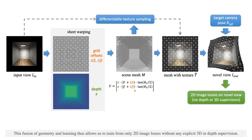The whole pipeline is end-to-end trainable, and this fusion of geometry and learning allows us to train from only 2D image losses without any explicit 3D or depth supervision.